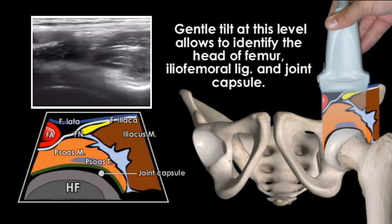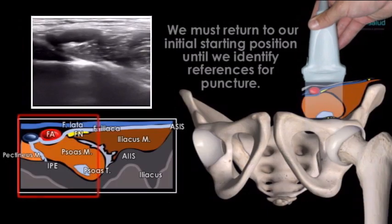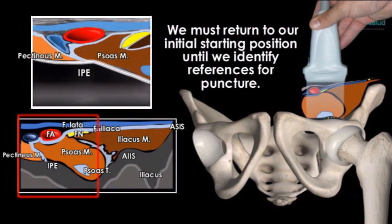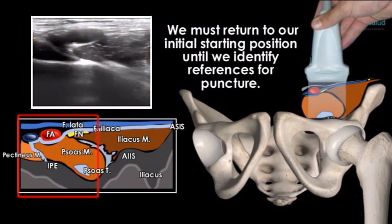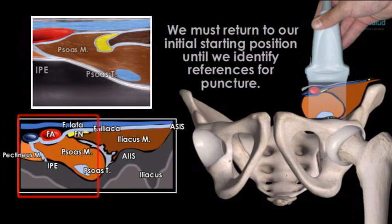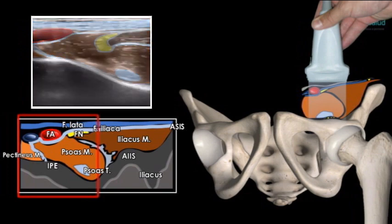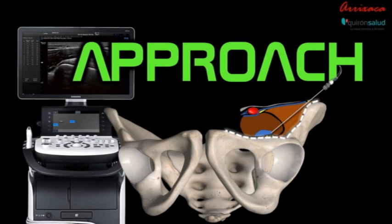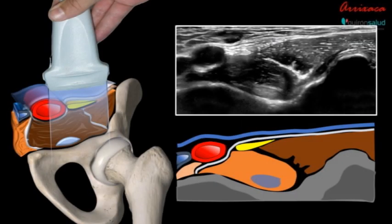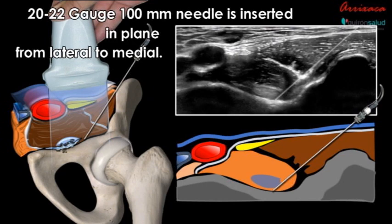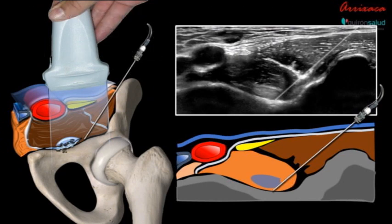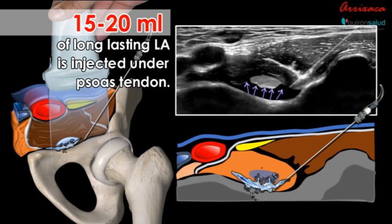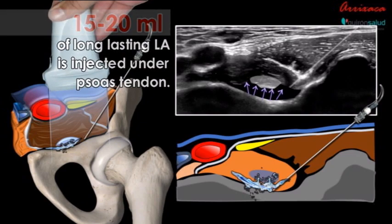We then return to our starting point to perform the initial approach with the needle. We recommend using a 20 to 22 gauge, 100 millimeter needle. The approach is performed in-plane and from lateral to medial, at an insertion angle of about 35 to 40 degrees, until bony contact is made under the psoas tendon. 15 to 20 milliliters of a long-lasting local anesthetic is then injected under the psoas muscle and psoas tendon while observing to confirm displacement.